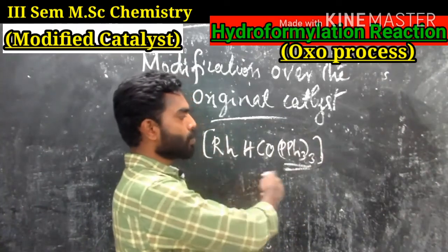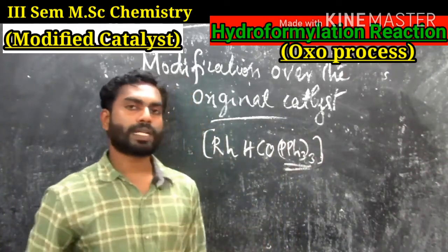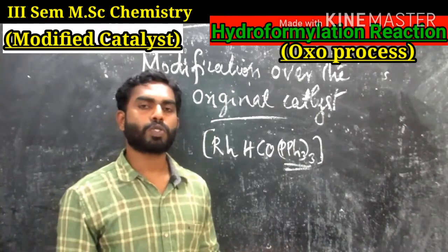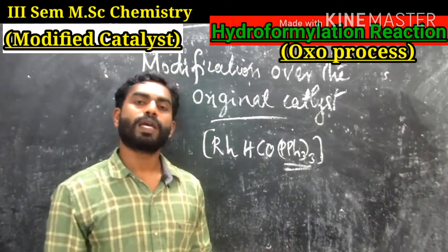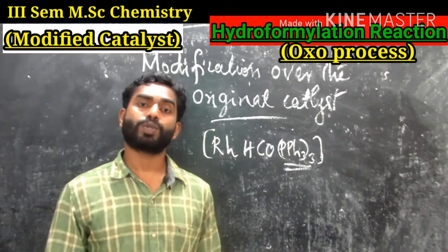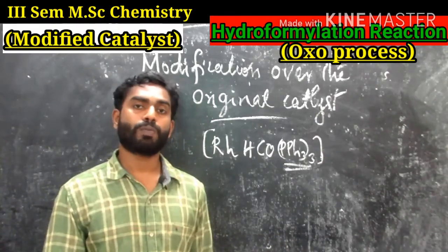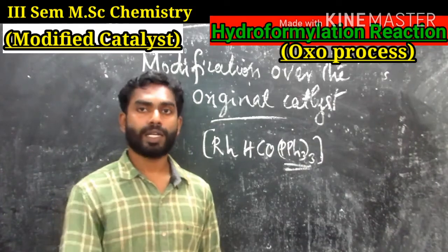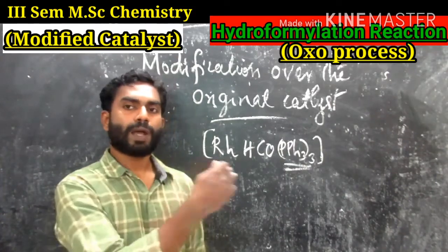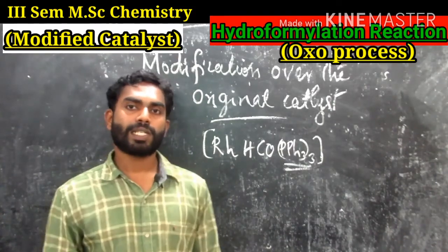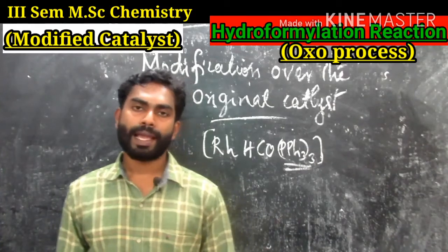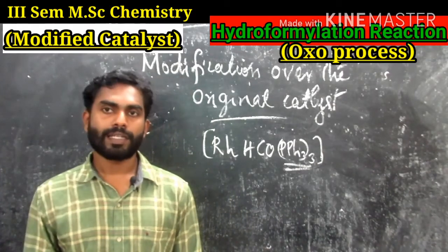This rhodium complex is catalytically active at 25°C and one atmospheric pressure. Due to steric reasons from the sterically hindered PPh₃ ligand, it produces only linear aldehydes from terminal olefins. Internal double bonds are hydroformylated to give ketones, and the catalyst also causes hydrogenation to alkanes.